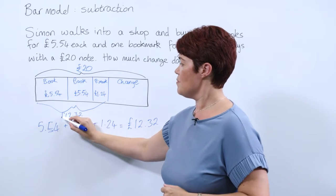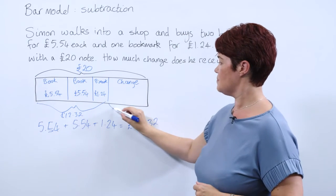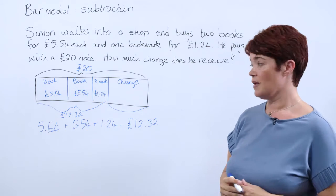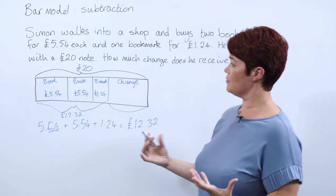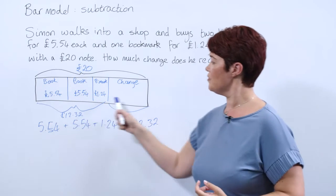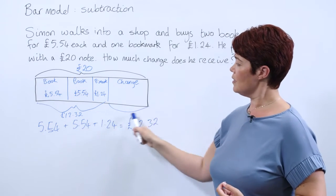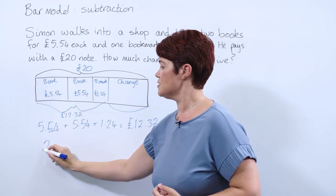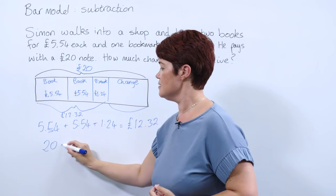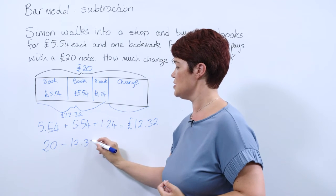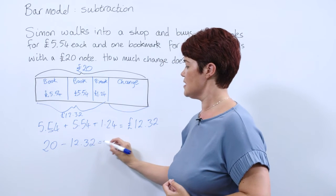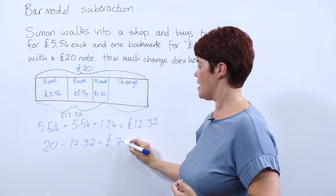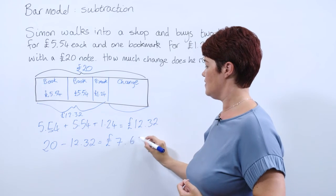So now what we're left with is this part — the change. And hopefully pupils will realise the whole thing's worth £20, so to work out how much change we need to do £20 take away £12.32 to get to £7.68.